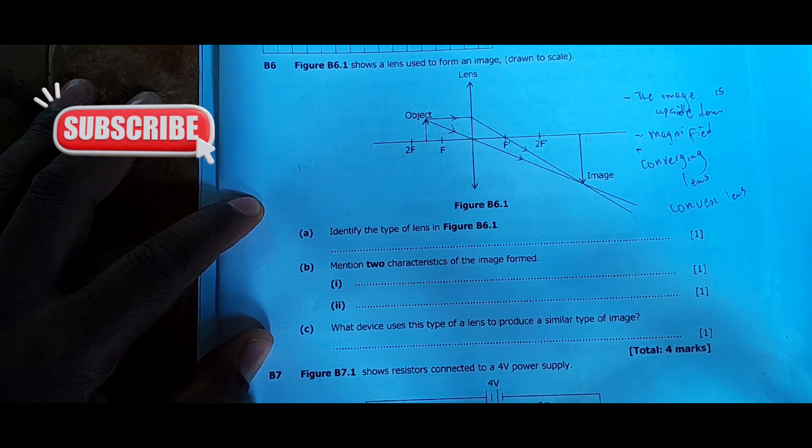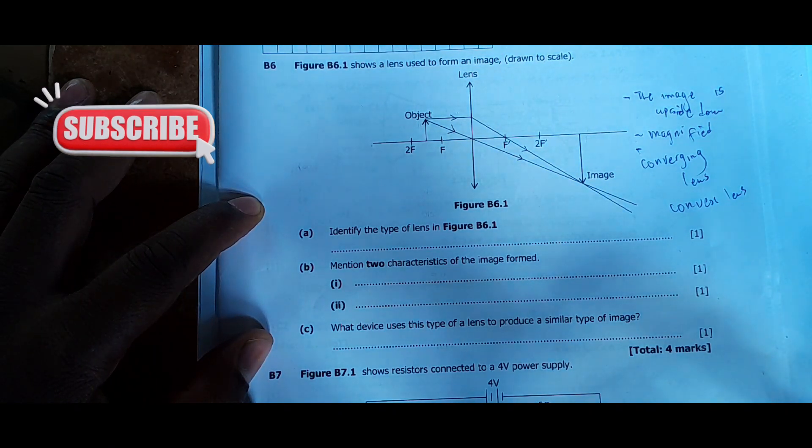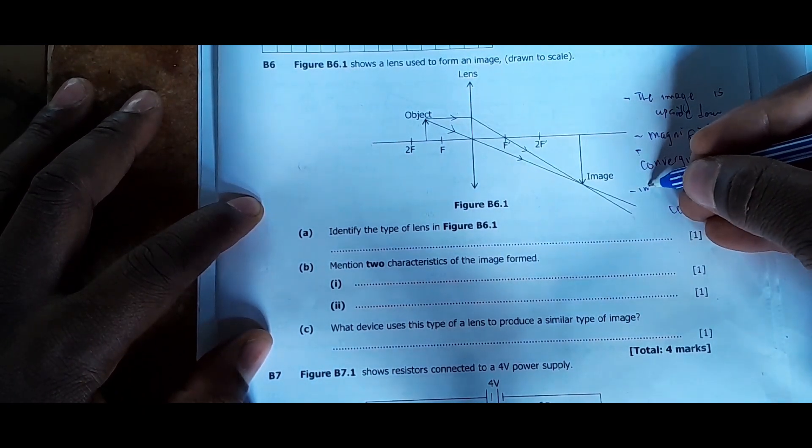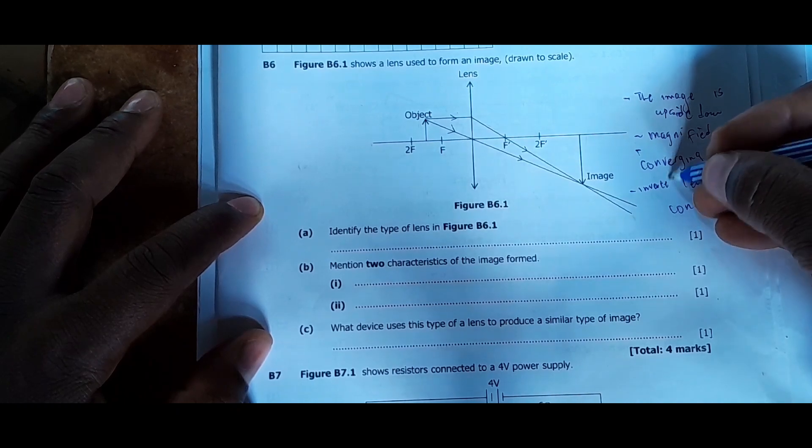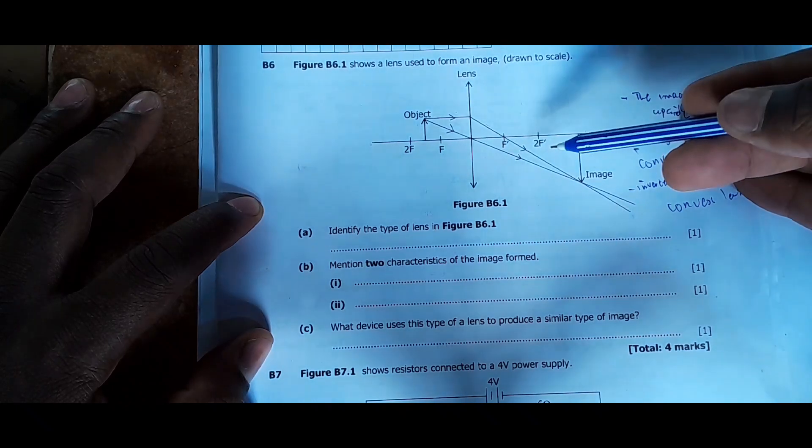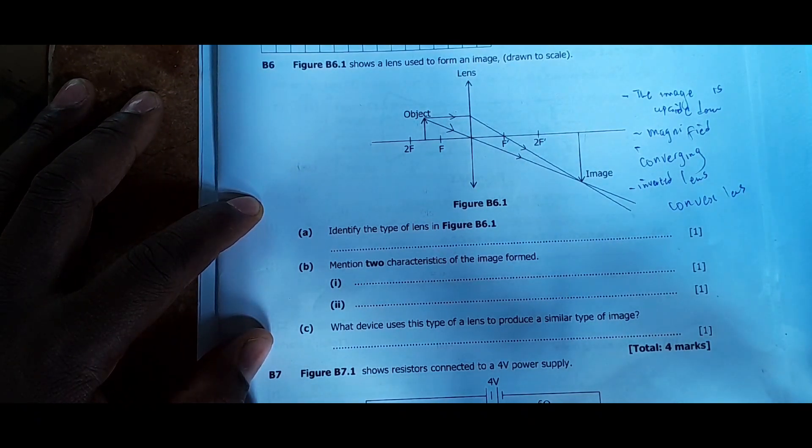The other characteristic is that the image is real. The image is real, it's real because it's upside down. Then we can go ahead and say the image is inverted. The image is inverted. Then we can say the image is formed beyond 2F. So those are enough, they said two, I've given more than two and we are done with that.